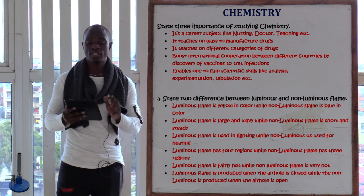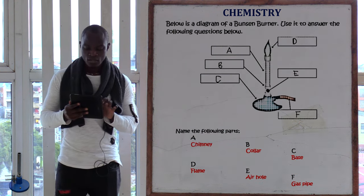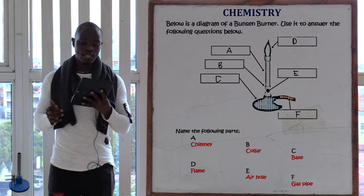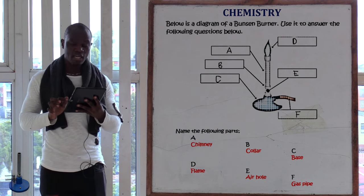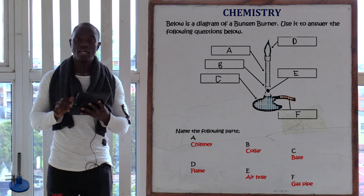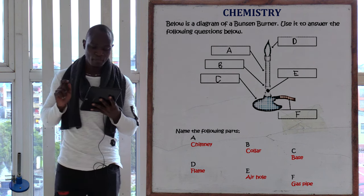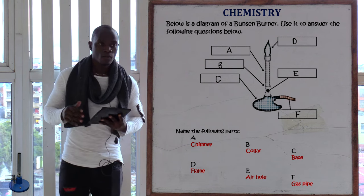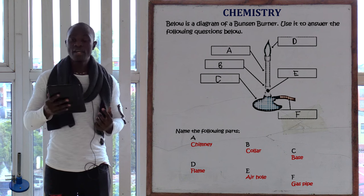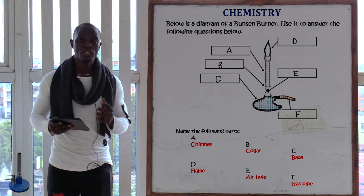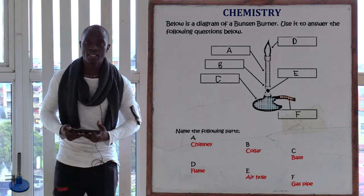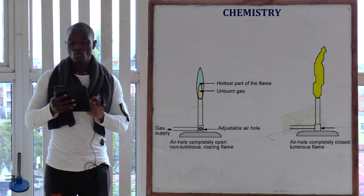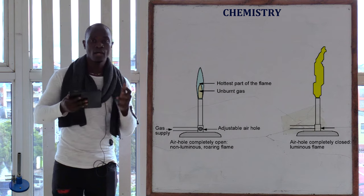Letter B shows a diagram of the Bunsen burner. Name the parts: part A is the chimney; part B is the collar; part C is the base; part D is the flame; part E is the air hole; part F is the gas pipe. If asked to define the part labeled D — a flame is a mass of burning gases. We have two types of flame: the luminous flame and the non-luminous flame.